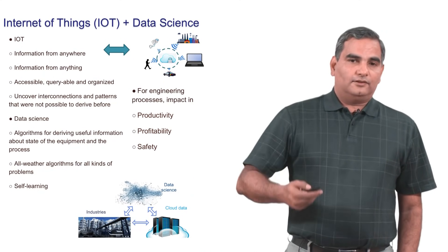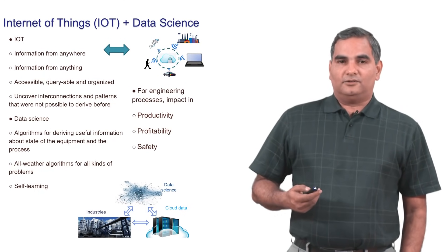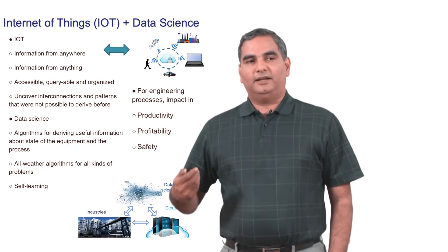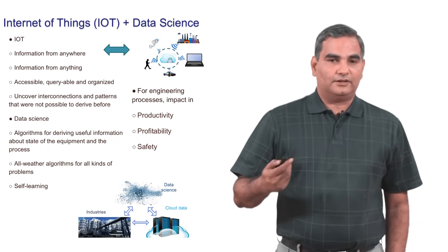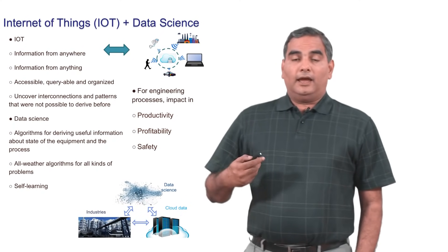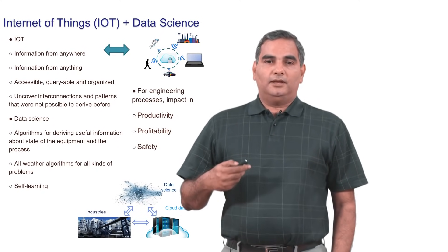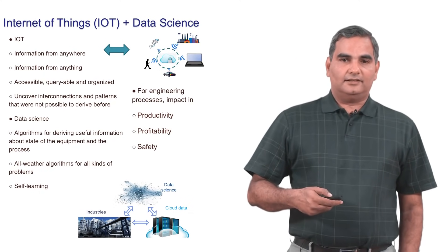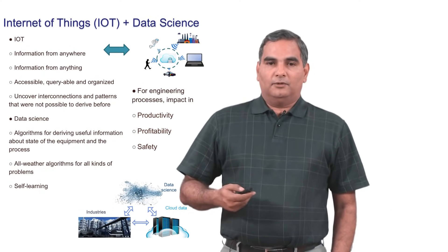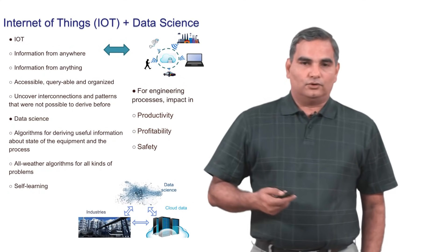Now this is the context from engineering plants, where lots of data is there. So we have big data in process industries, manufacturing industries, and so on. So again, what you need to do is be able to use this data with data science algorithms for deriving useful information about the state of the equipment, process, and so on.